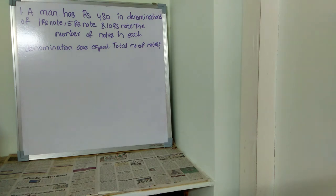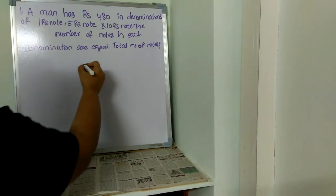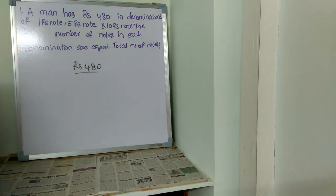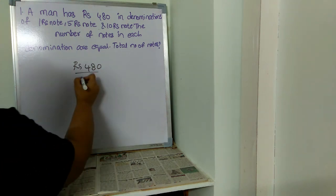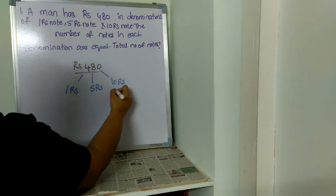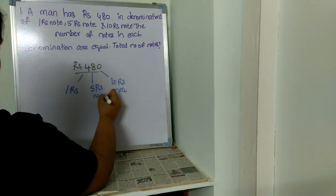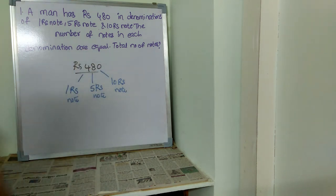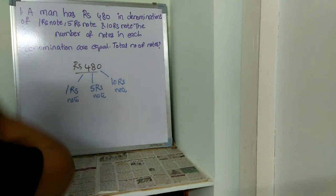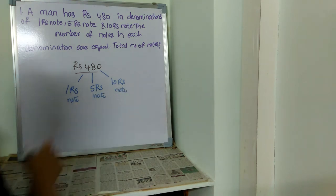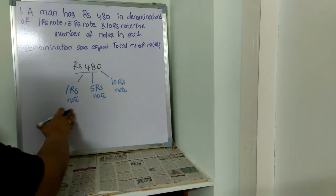So what does this question mean? A person has 480 rupees in total. He has one rupee notes, five rupee notes, and ten rupee notes. All these notes together make 480 rupees. After counting all three types of notes, he is having 480 rupees.